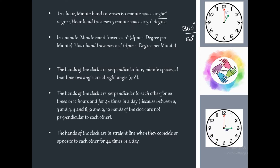The hands of the clock are perpendicular to each other 22 times in 12 hours and 44 times in a day. So a 15 minute space separation, which gives 90 degrees, occurs 44 times in 24 hours.